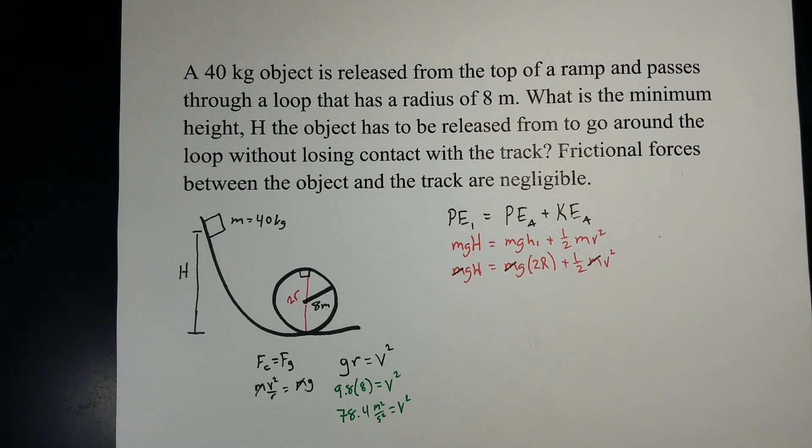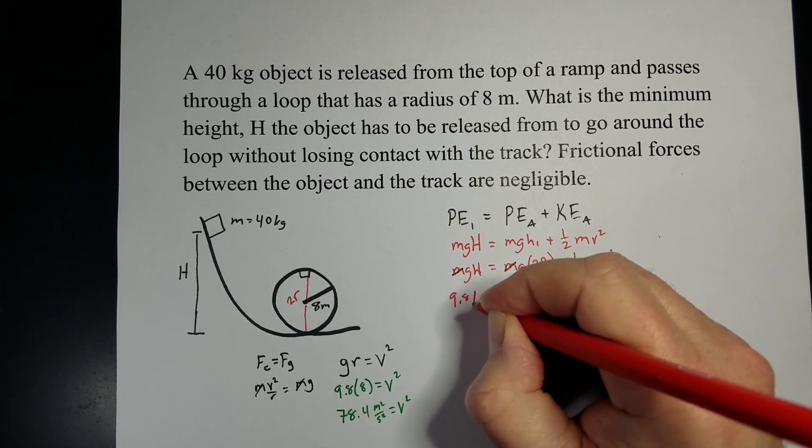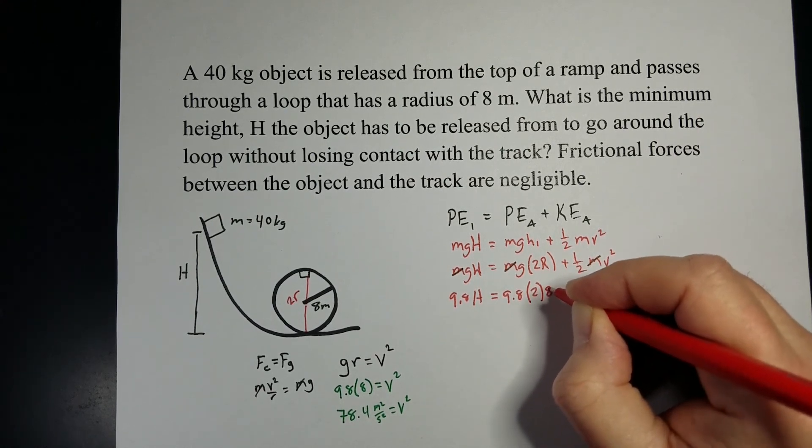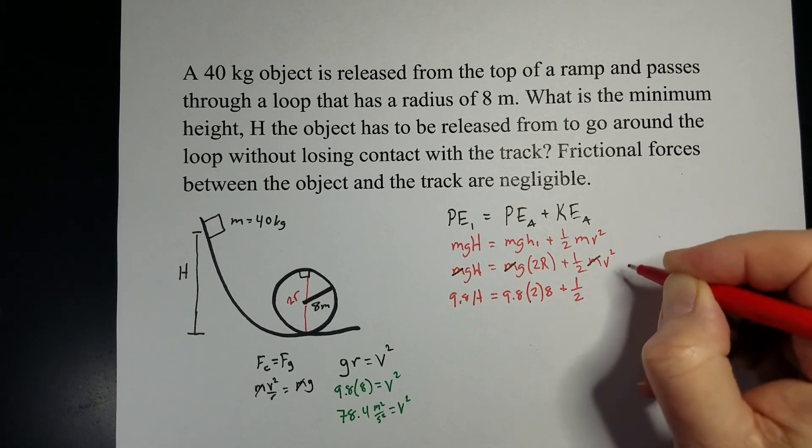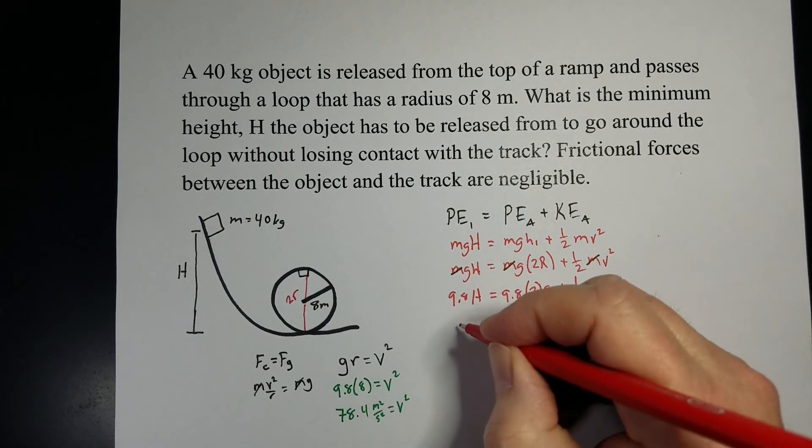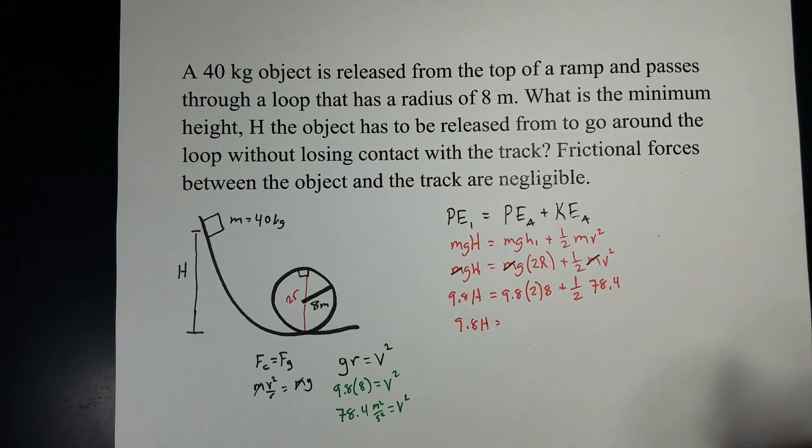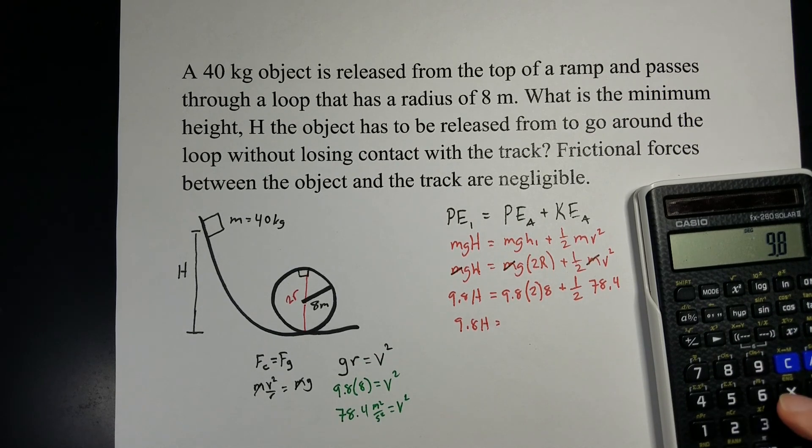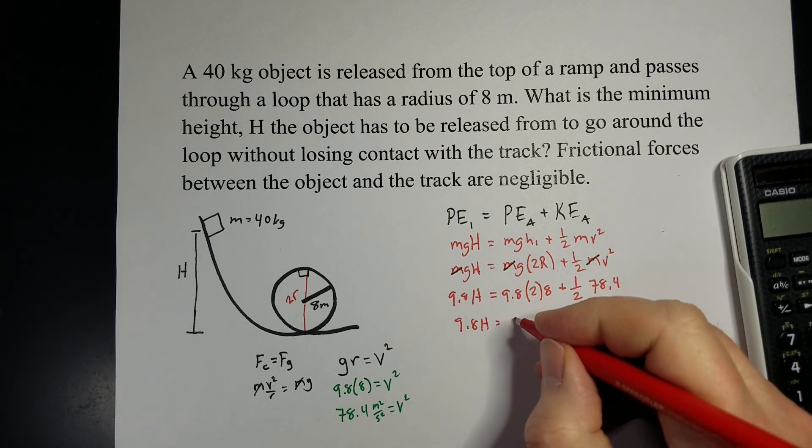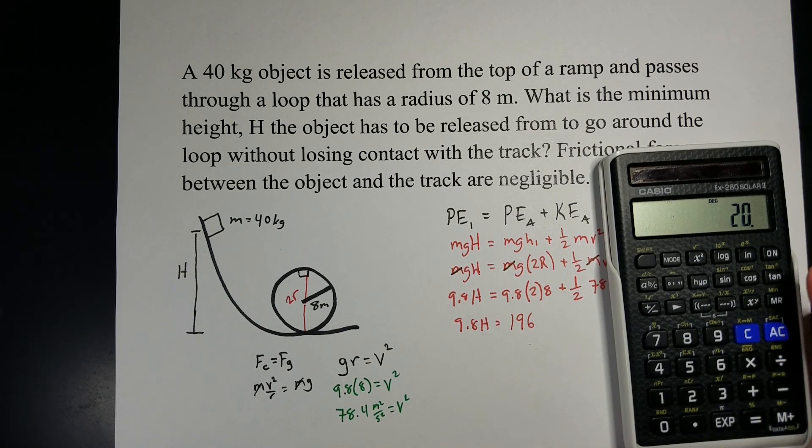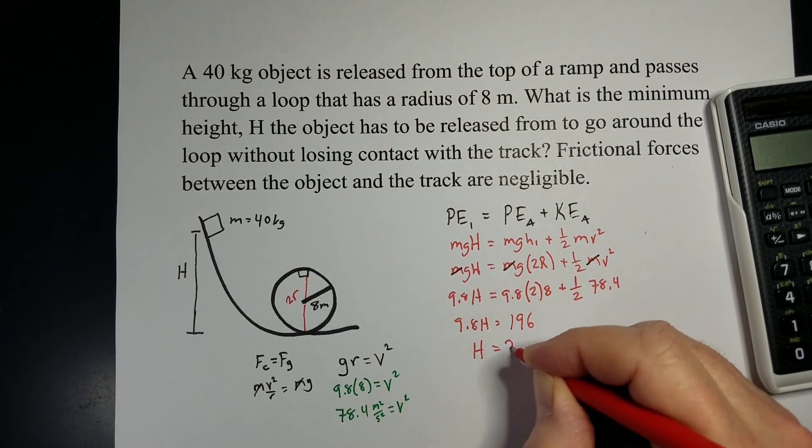So we get 9.8h equals 9.8 times 2 times the radius, which is 8, plus 1 half v squared. But v squared is 78.4. And I want to solve this for h. So I want to first determine what's on the other side. So 78.4 divided by 2 gives me that. Plus 9.8 times 2 times 8 gives me, over on this side, 196. Now, I'm going to divide that by 9.8. And we get a height of 20 meters.